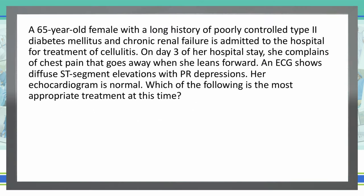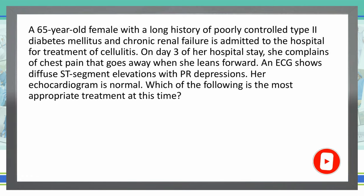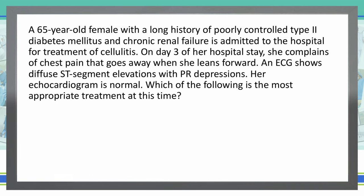As always, we start with the last sentence and then read the rest of the vignette. Which of the following is the most appropriate treatment at this time? A 65-year-old female with a long history of poorly controlled type 2 diabetes mellitus and chronic renal failure is admitted to the hospital for treatment of cellulitis. On day 3 of her hospital stay, she complains of chest pain that goes away when she leans forward. An ECG shows diffuse ST segment elevations with PR depressions. Her echocardiogram is normal.